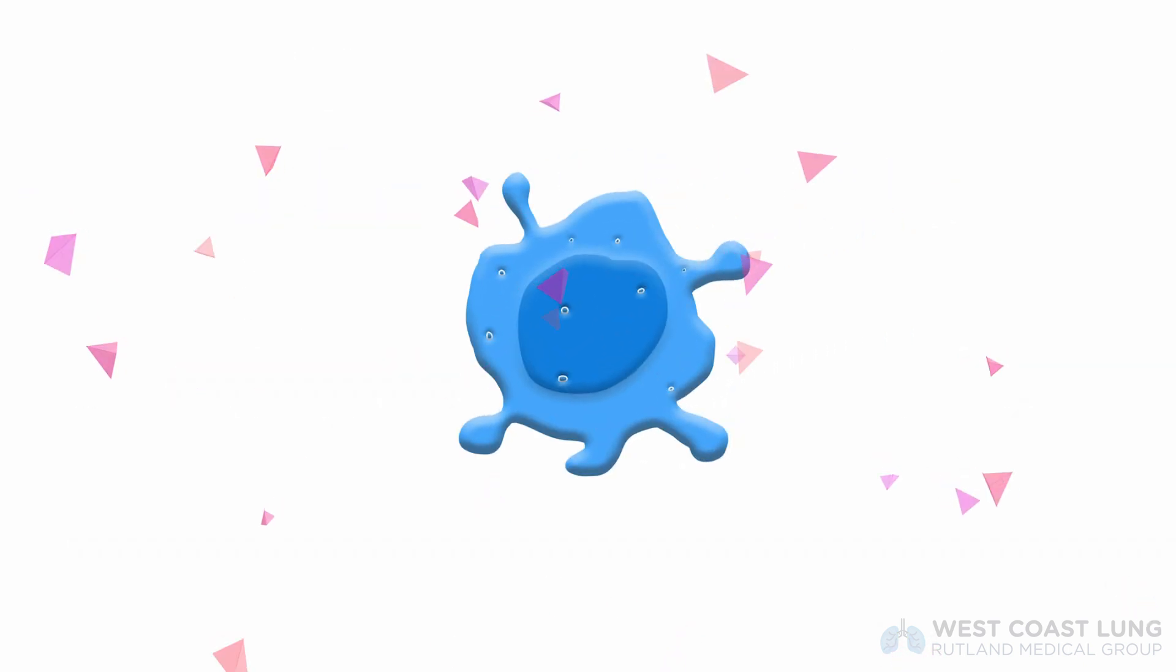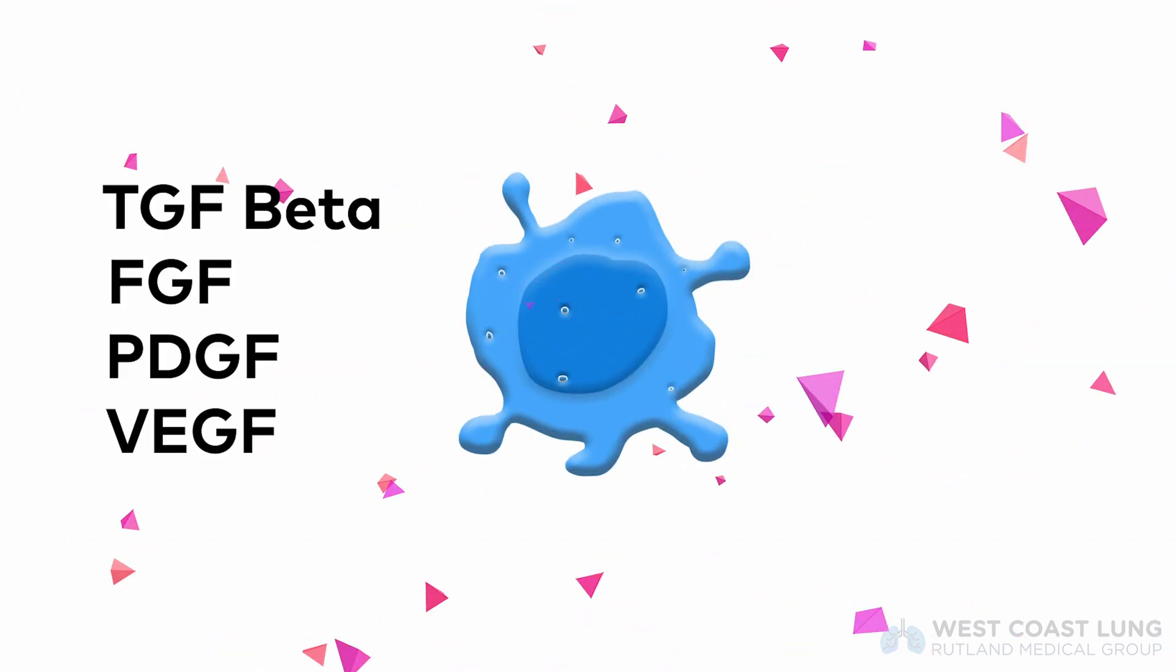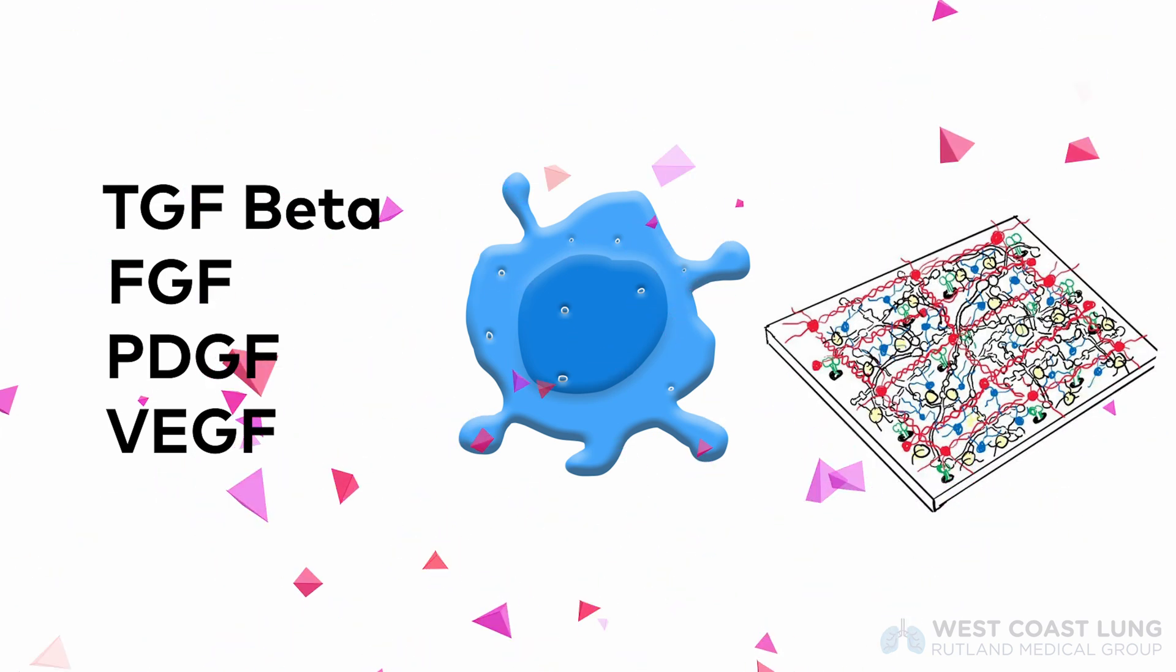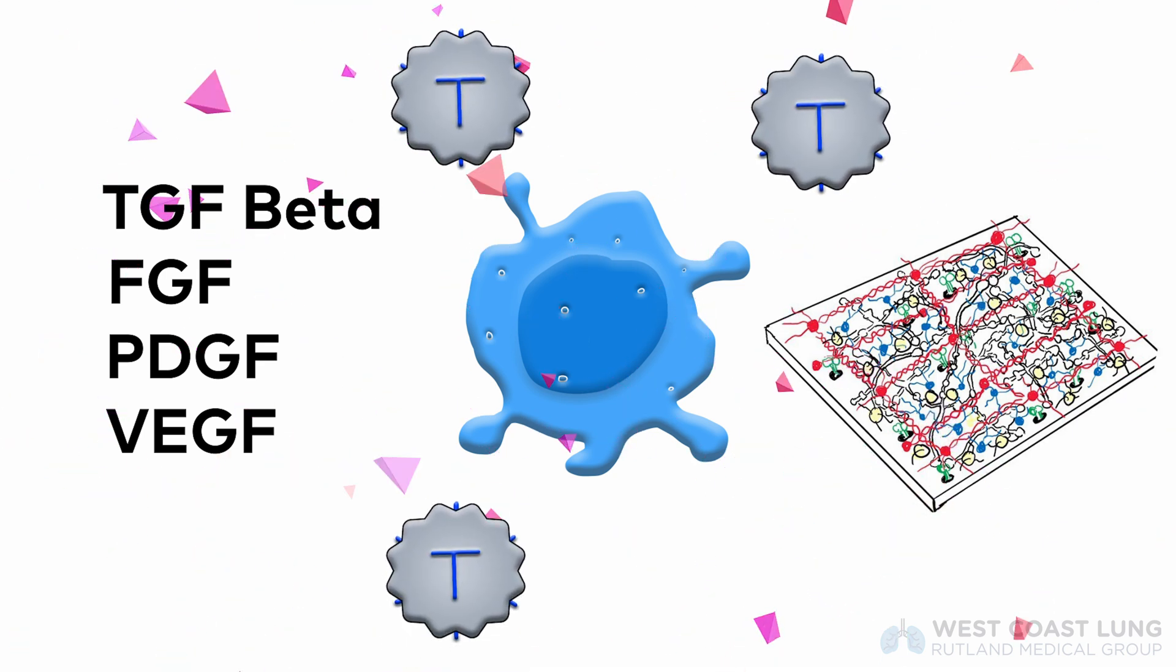These M2 macrophages secrete TGF-beta, FGF, PDGF, VEGF. These are just growth factors. We're going to come back to this at another time. They also lead to the production of more extracellular matrix. They also secrete a molecule called CCL18, which attracts T cells and is present in bronchoalveolar lavage fluid during an exacerbation of IPF. Probably means that macrophages are involved here.